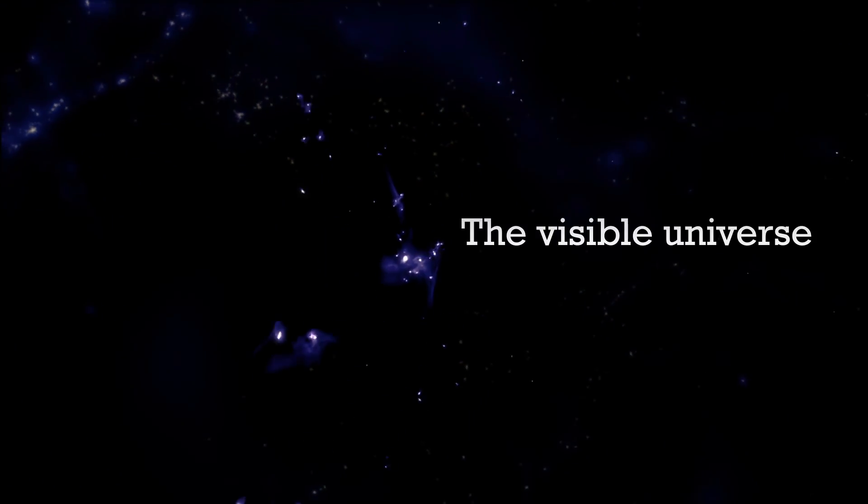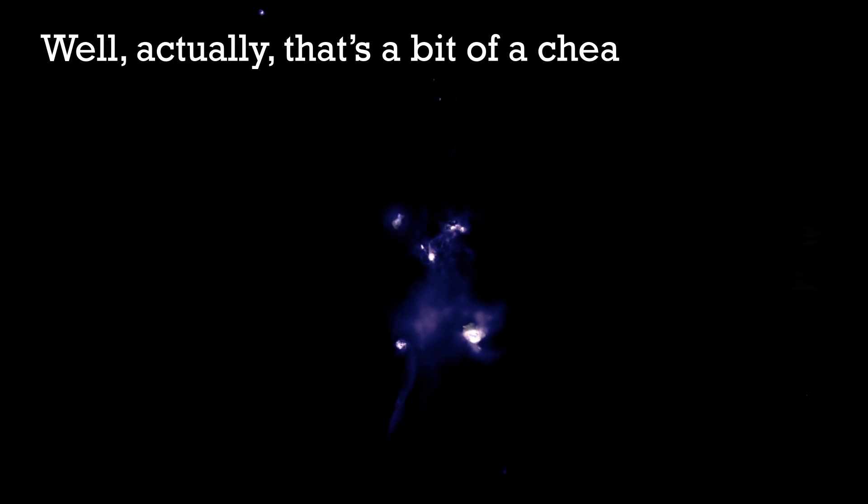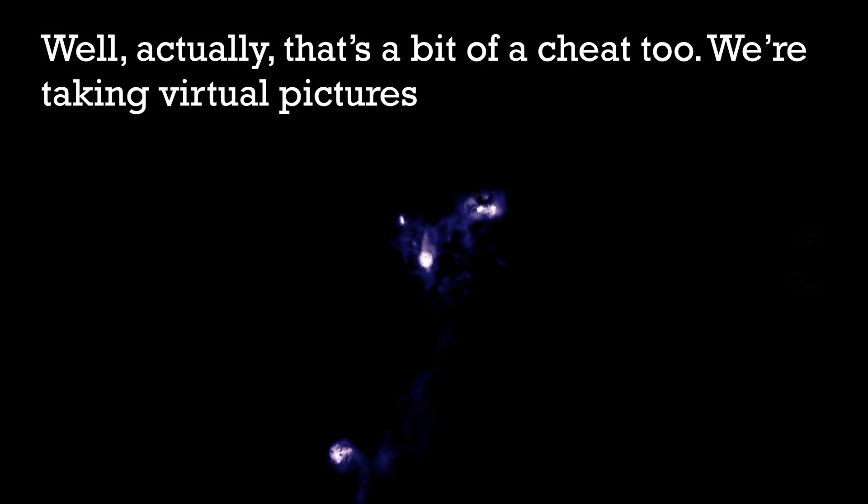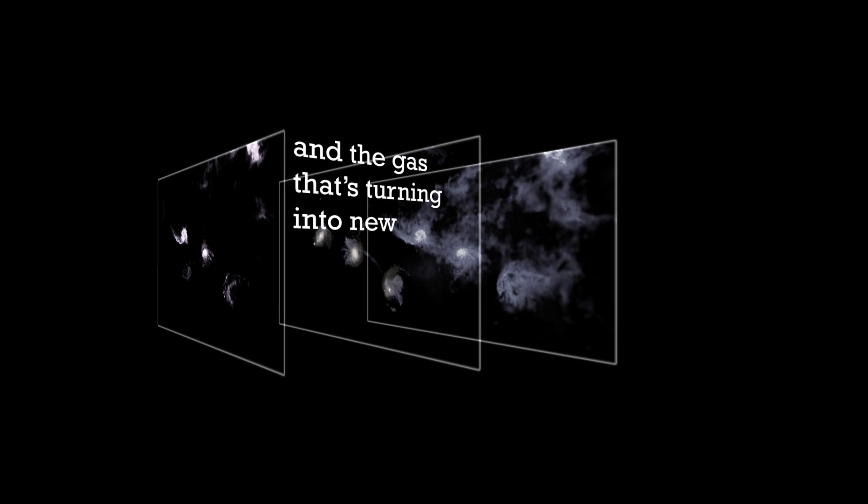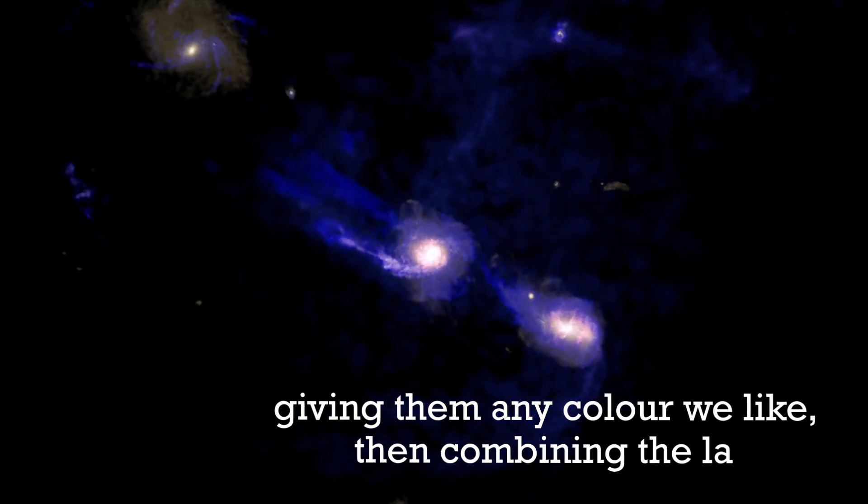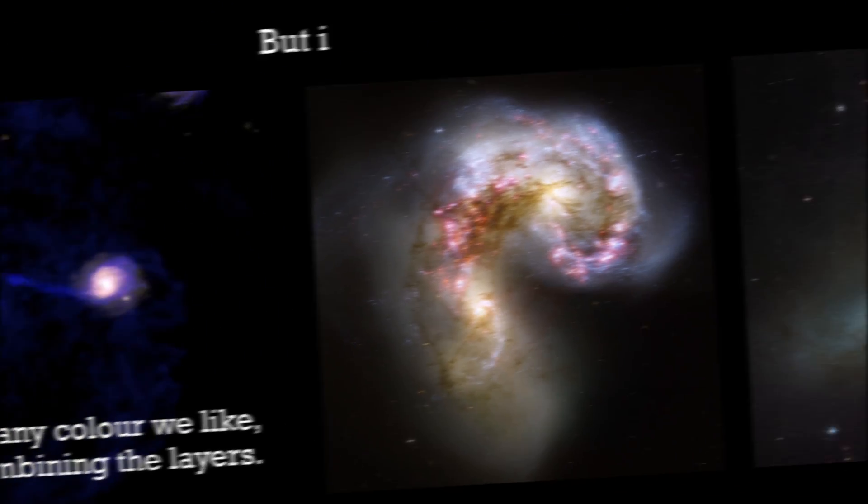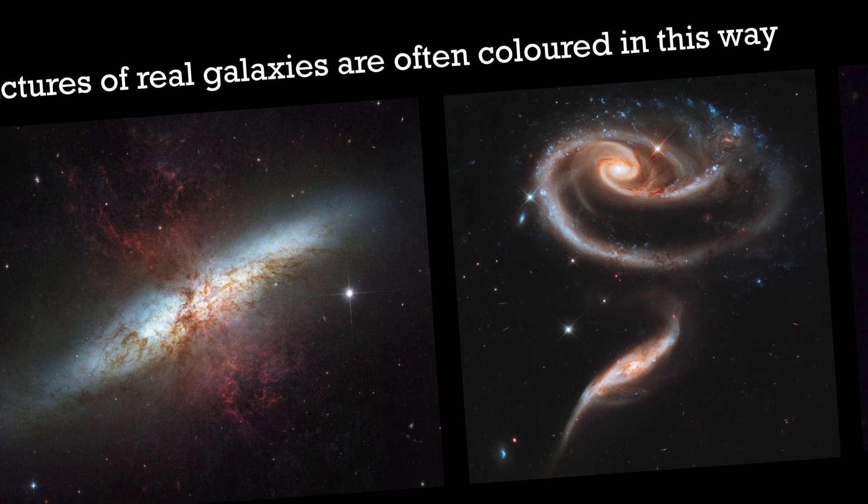The visible universe looks more like this. Well, actually, that's a bit of a cheat, too. We're taking virtual pictures of the gas, the stars and the gas that's turning into new stars, giving them any colour we like, then combining the layers. But it's not too much of a cheat. Pictures of real galaxies are often coloured in this way, too.